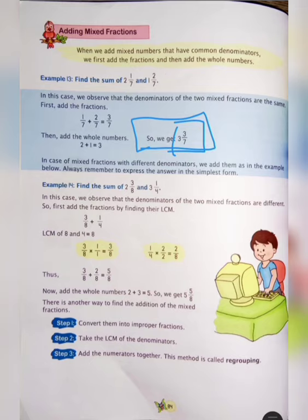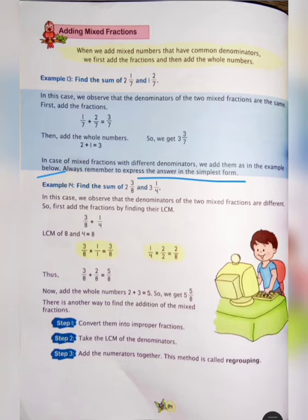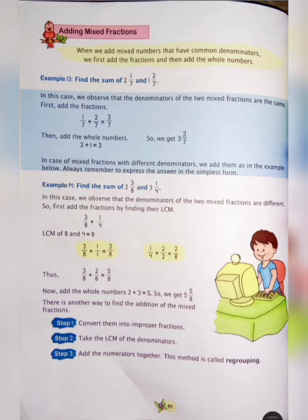In case of mixed fractions with different denominators, we add them as in the example below. Always remember to express the answer in the simplest form. Example 14: find the sum of 2 and 3 upon 8, and 3 and 1 upon 4. You can see here there are different denominators 8 and 4. We observe that the denominators of the two mixed fractions are different, so first add the fractions by finding their LCM.